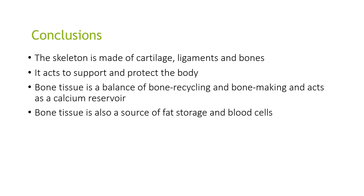In conclusion, the skeleton is made of cartilage, ligaments and bones and it acts to support and protect the body. Bone tissue involves a balance of bone cycling and bone making, and acts as a calcium reserve. Bone tissue is also a source of fat and blood cells.